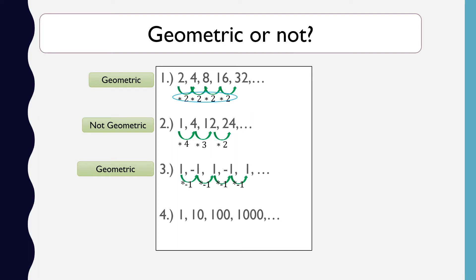For the last item, we have 1, 10, 100, and 1,000. From 1, times 10 gives 10; 10 times 10 is 100; 100 times 10 is 1,000. The same number is being multiplied to each term from the starting point, so this is geometric. Therefore, items 1, 3, and 4 are geometric.